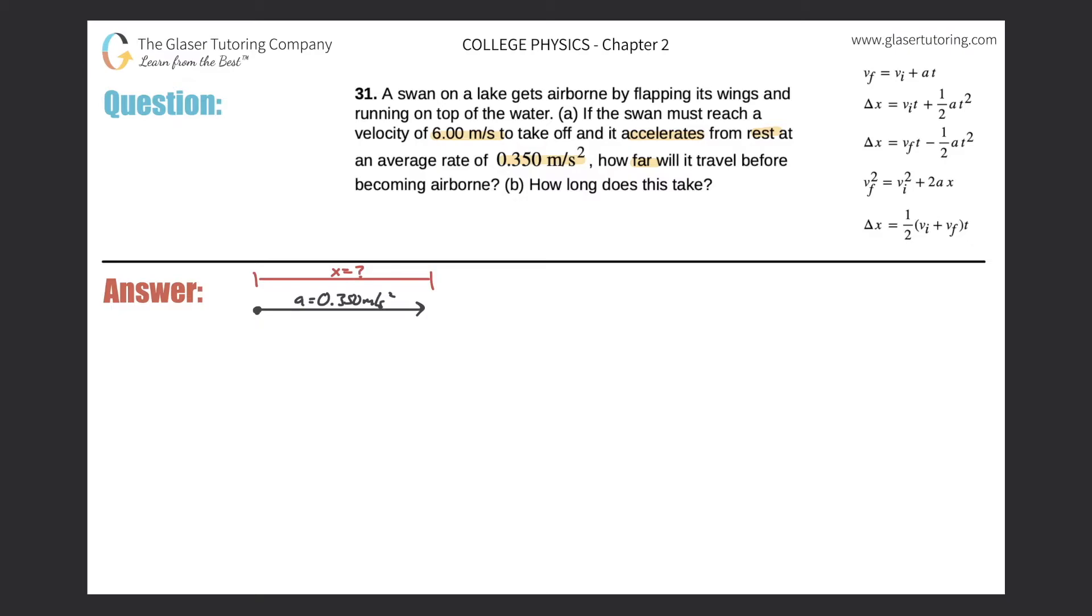It also says that it starts from rest. So we know that the velocity at the start here, the initial velocity, is going to equal 0 meters per second. And we know that in order for it to finally take off, the velocity must be at the end 6 meters per second. So the final velocity here is going to be 6.00 meters per second.